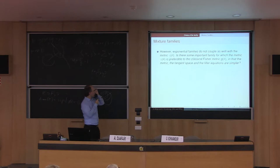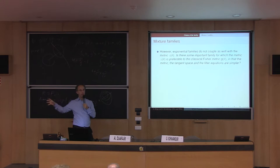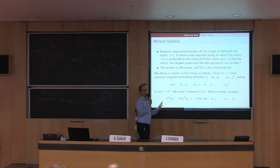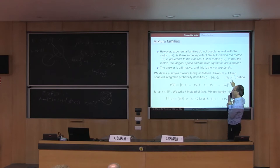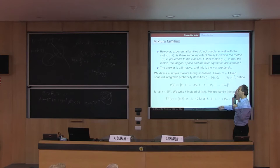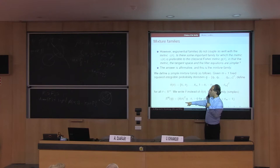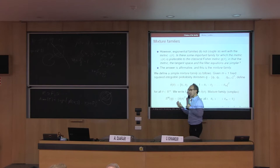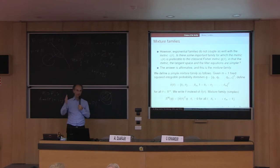Is there another parametric family — not the exponential — that we can use with the direct metric rather than the Fisher-Rao metric and makes the filter convenient? The answer is affirmative: it's the mixture family. In the simplest case, you take n+1 component densities and parametrize the simplex with a vector of n+1 real numbers between 0 and 1 that add up to 1. The finite dimensional manifold is defined as the linear convex combination of the densities according to the parameters theta.